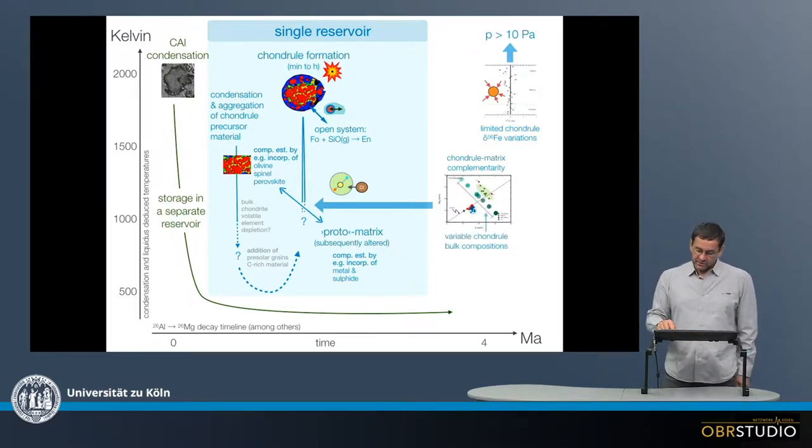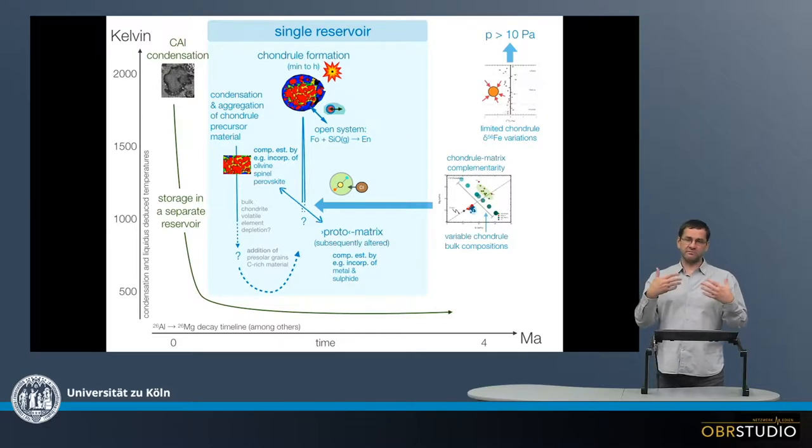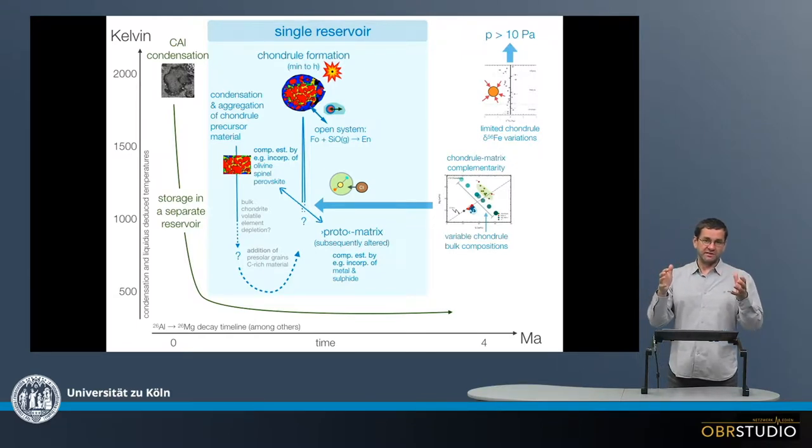And when we look at the chondral composition, we see that there's a certain variation in the bulk chondral compositions. So chondrules do not have all the same composition, they have a variation in the composition. And this might also be explained by this open system process here, whereby some of the chondrules exchanged more material with the surrounding than others, maybe due to their surface to volume ratio, to variations in the time they experienced heating, or maybe the peak temperature.